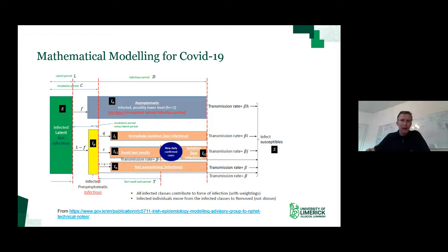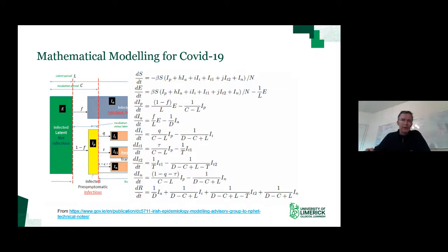Before people become symptomatic, they are still infectious and can infect other people for one or two days. Some people show symptoms and go to be tested or self-isolate; there's also a significant cohort who don't show symptoms but are still infectious — the asymptomatic infected group. In mathematical language this is called an SEIR model: S for susceptible, E for exposed, I for infected, and R for recovered. How people move through these compartments is driven by differential equations, with parameters worked out in collaboration with our colleagues in biology.